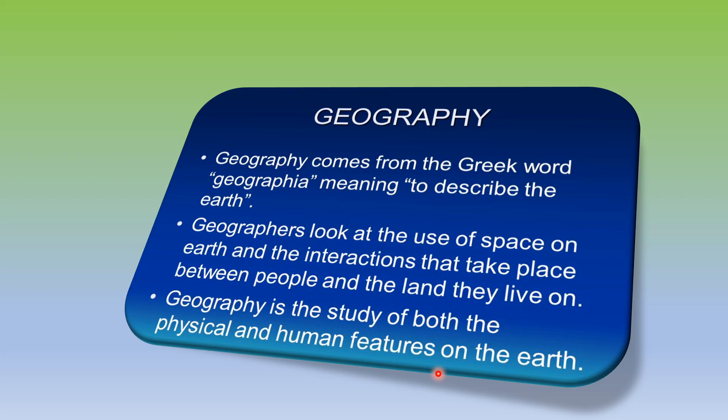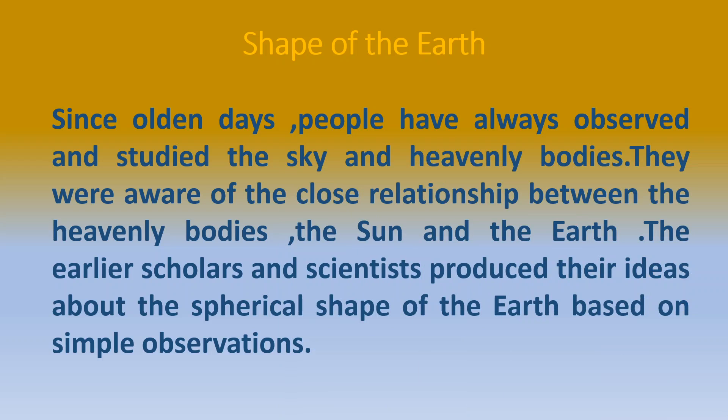Since very ancient times, there has been continuous debate relating to the shape of the Earth. Since olden days, people have always observed and studied the sky and heavenly bodies. They were aware of the close relationship between the heavenly bodies, the sun and the Earth. The earlier scholars and scientists produced their ideas about spherical shape of the Earth based on very simple observation. We are going to study about all these simple observations in detail.